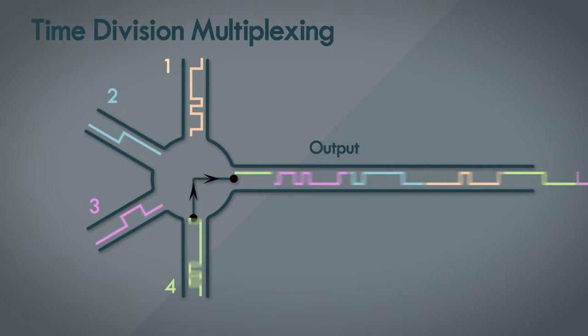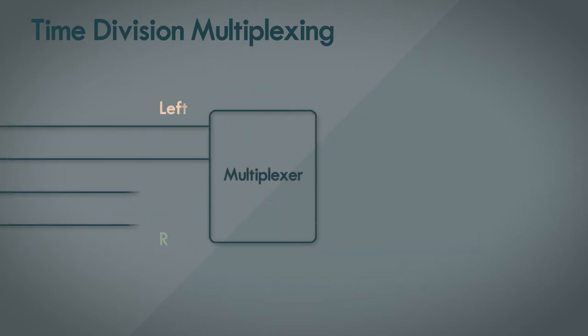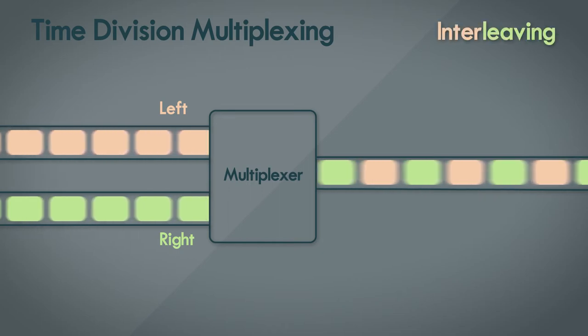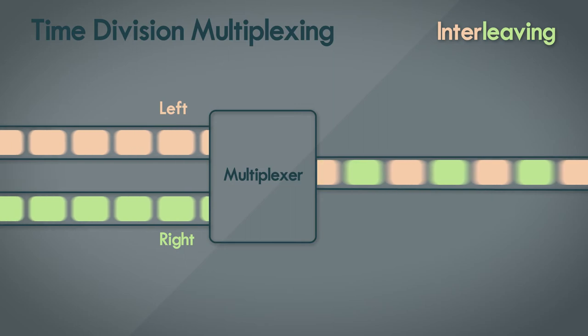As long as the time duration is constant, we get equal length snippets of each input signal in the output. In the simplest case, where there are two input signals, the snippets are arranged alternatively. This is called interleaving, and is common in all digital media that's multi-dimensional.